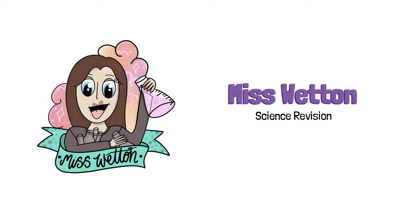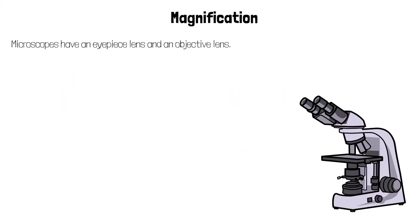In this video we're going to look at how to calculate the magnification of a microscope. The first way to calculate magnification is to look at the eyepiece and objective lens of the microscope. The eyepiece lens is the one you look down and it often has a magnification of 15 times.